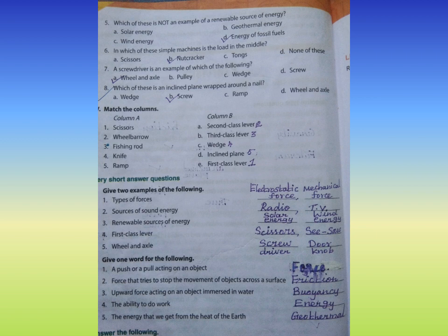Roman numeral two, give one word for the following. Number one: A push or a pull acting on an object. Answer: Force. Number two: Force that tries to stop the movement of objects across the surface. Answer: Friction.